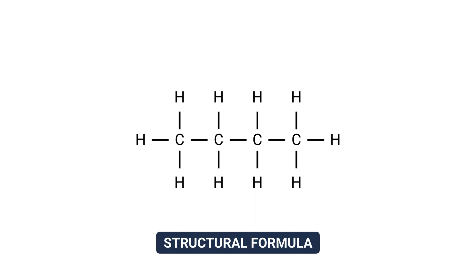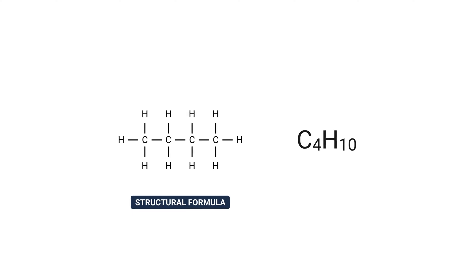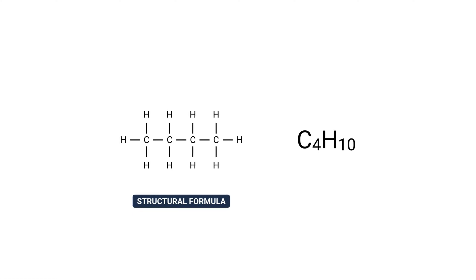This type of drawing is called a structural formula because it shows the structure of a substance, but it's time consuming. A faster way — which we're probably more used to — is to write out how many atoms of each element there are. That's called a molecular formula, like C4H10, showing four carbons and ten hydrogens. The downside is it doesn't share as much information about the structure or how the molecule might interact with other substances.